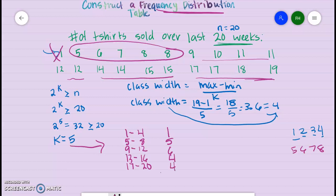Now let's add our frequencies and get our total. 1, 6, 12, 16, 20. So all 20 values are accounted for. That is all you would have to do, but let's take it a little bit further just to review.